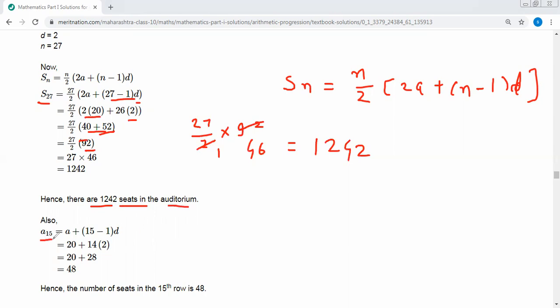Next, 15th term. To find the 15th term, a15 equals a plus 15 minus 1 into d. A value is 20 plus 14 into common difference 2. 20 plus 28 is 48. Therefore, number of seats in the 15th row is 48.